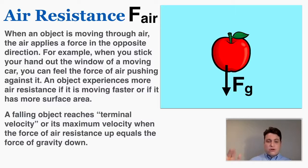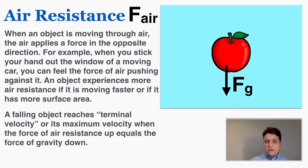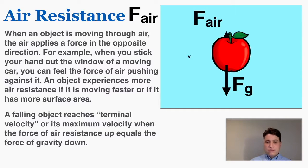A falling object reaches terminal velocity — its maximum velocity — when the force of air resistance upward equals the force of gravity downward. As you can see, as this object is falling through the air due to the force of gravity, it's getting faster and faster, and as a result its velocity is getting bigger and bigger.